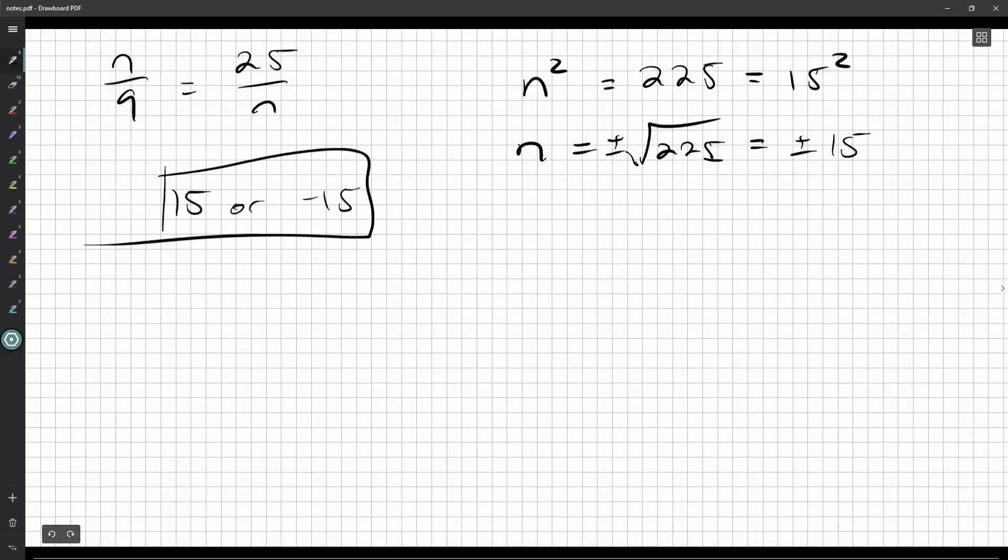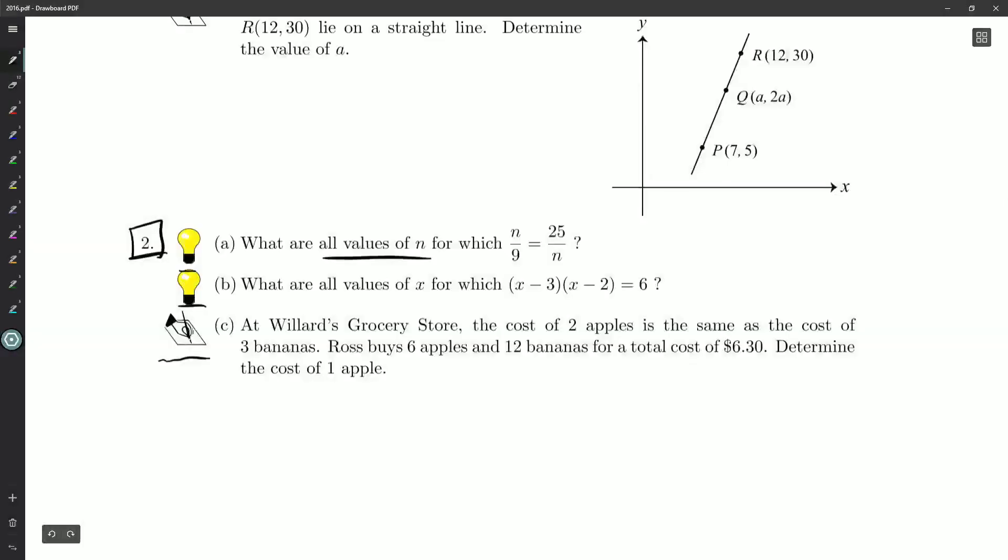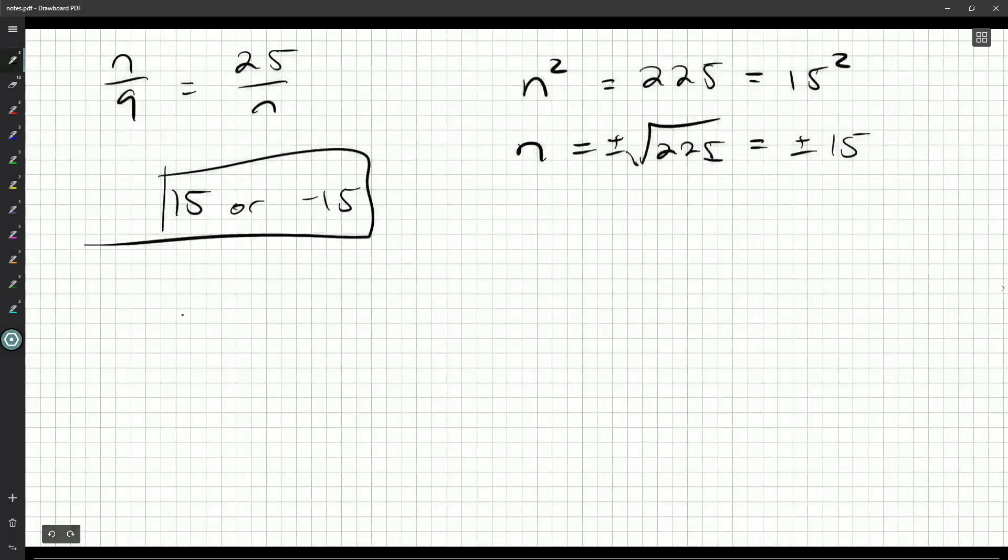All right, there we go. Okay, B part. What are all values of x for which x minus 3 times x minus 2 is equal to 6. Okay, we've got a quadratic here.